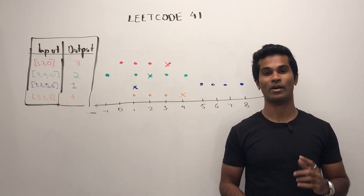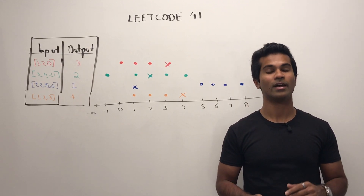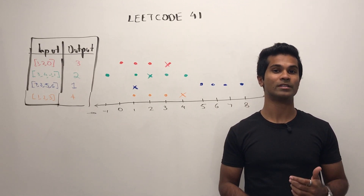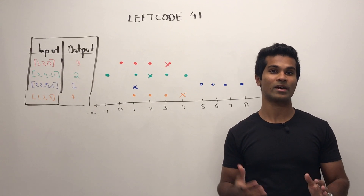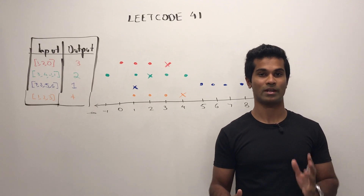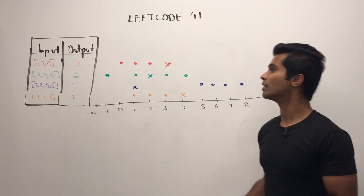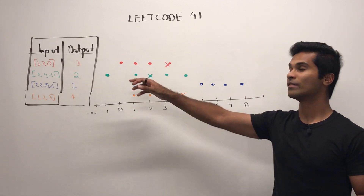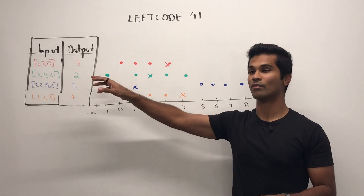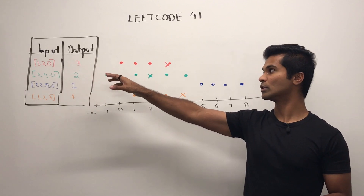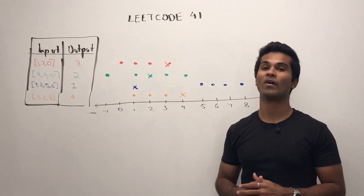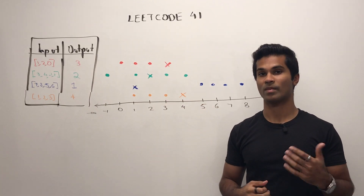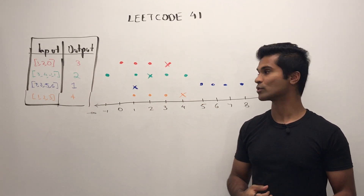The input is going to be an array of integers and the output needs to be an integer. So let's look at a few inputs and outputs. Given an input of 1, 2, 0, we can see the first missing positive from that array is 3.